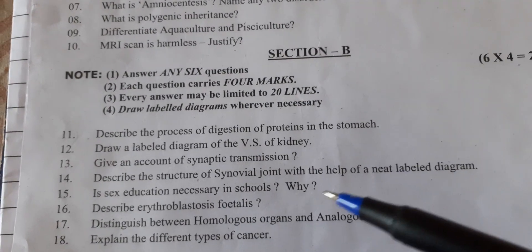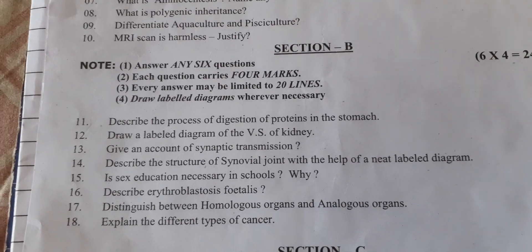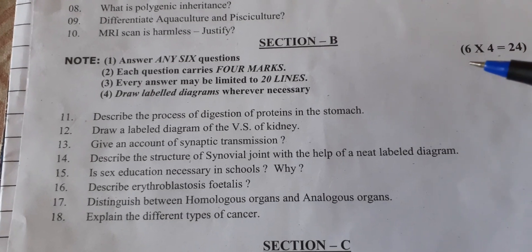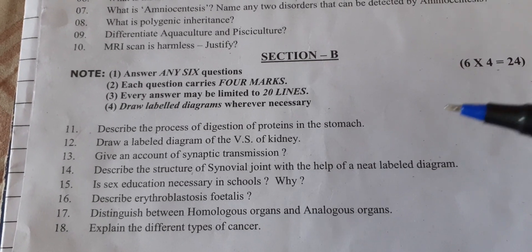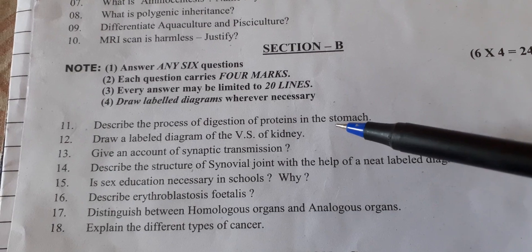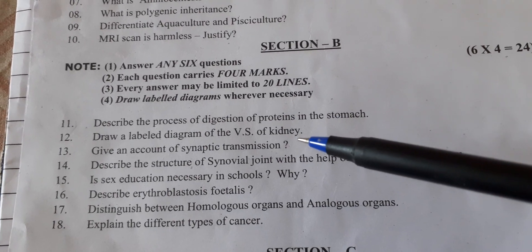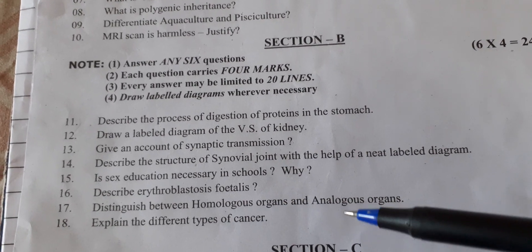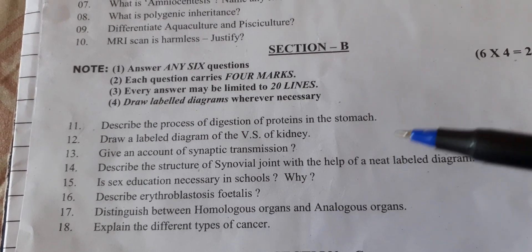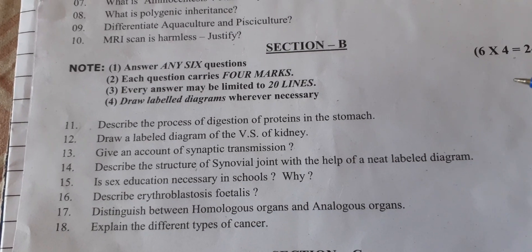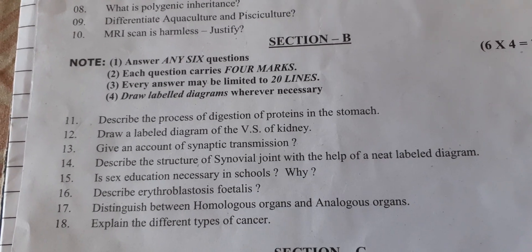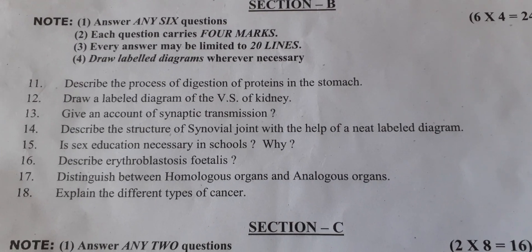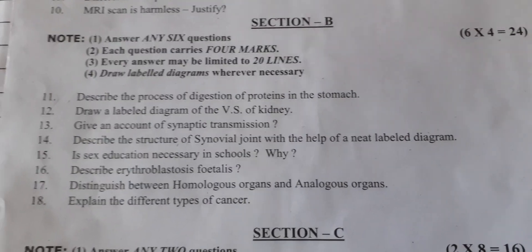Now come to Section B. In Section B, eight questions are given, out of which you need to answer only six. Each one carries four marks, so six fours are 24 marks. These are short answer question type. So 20 plus 24 gives 44 marks covered so far.